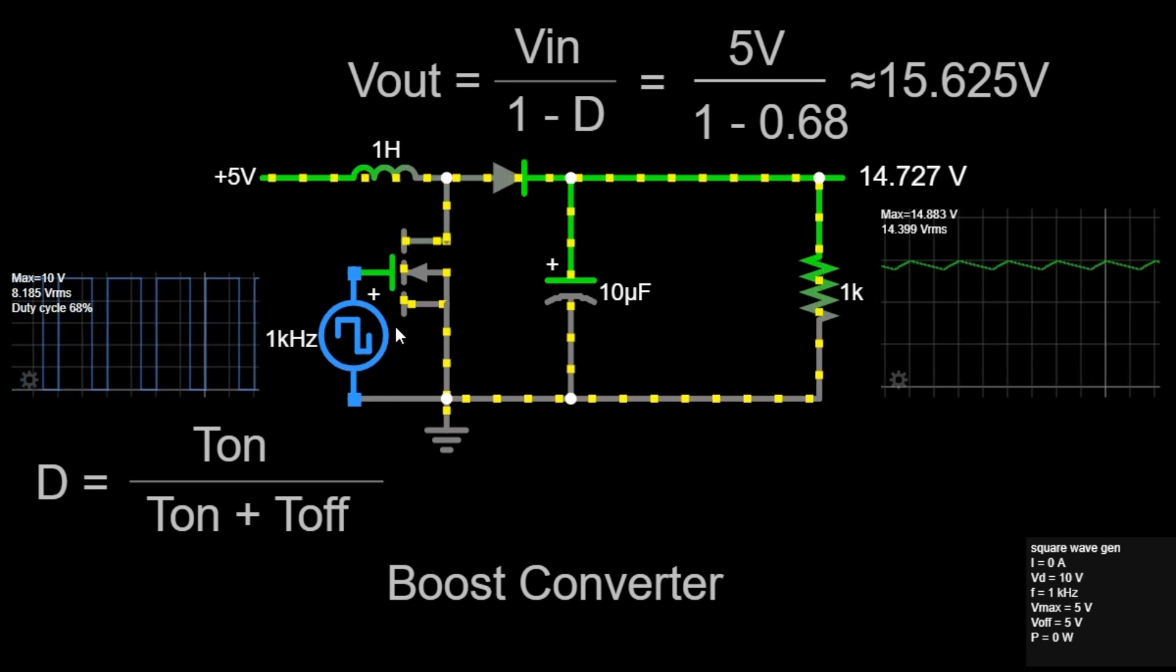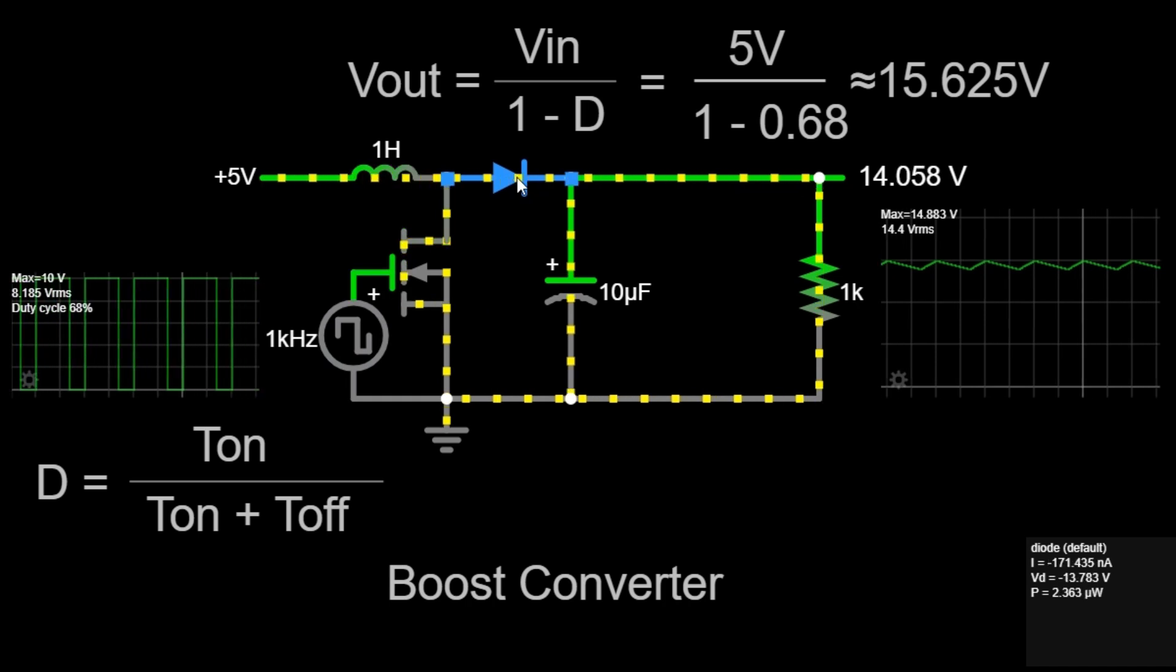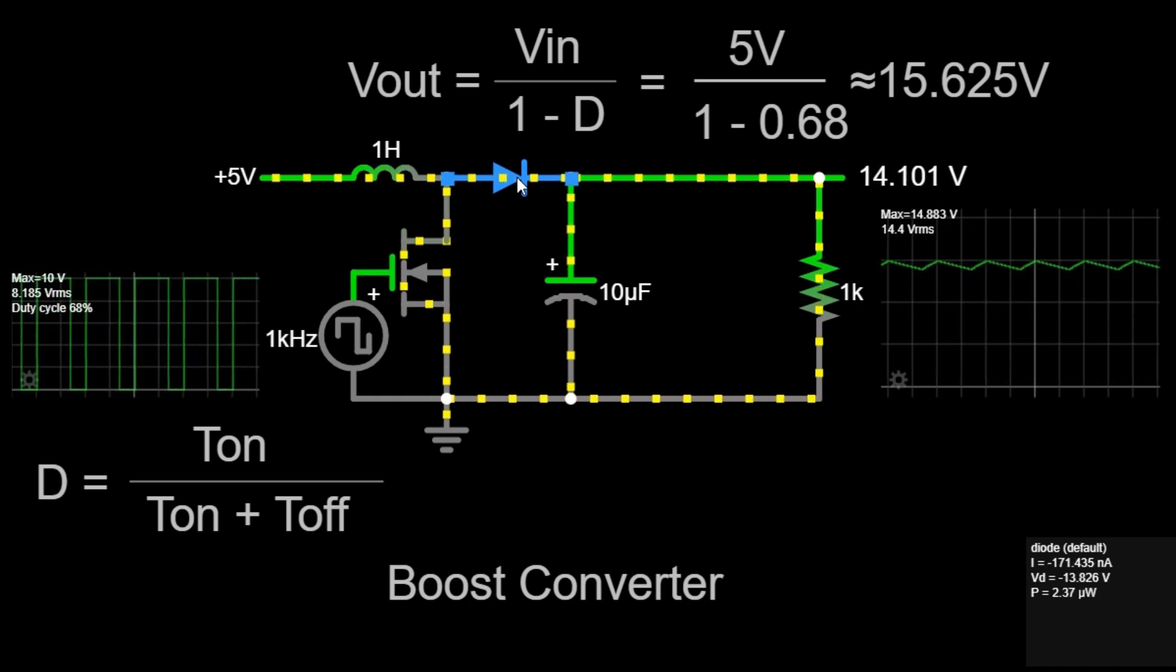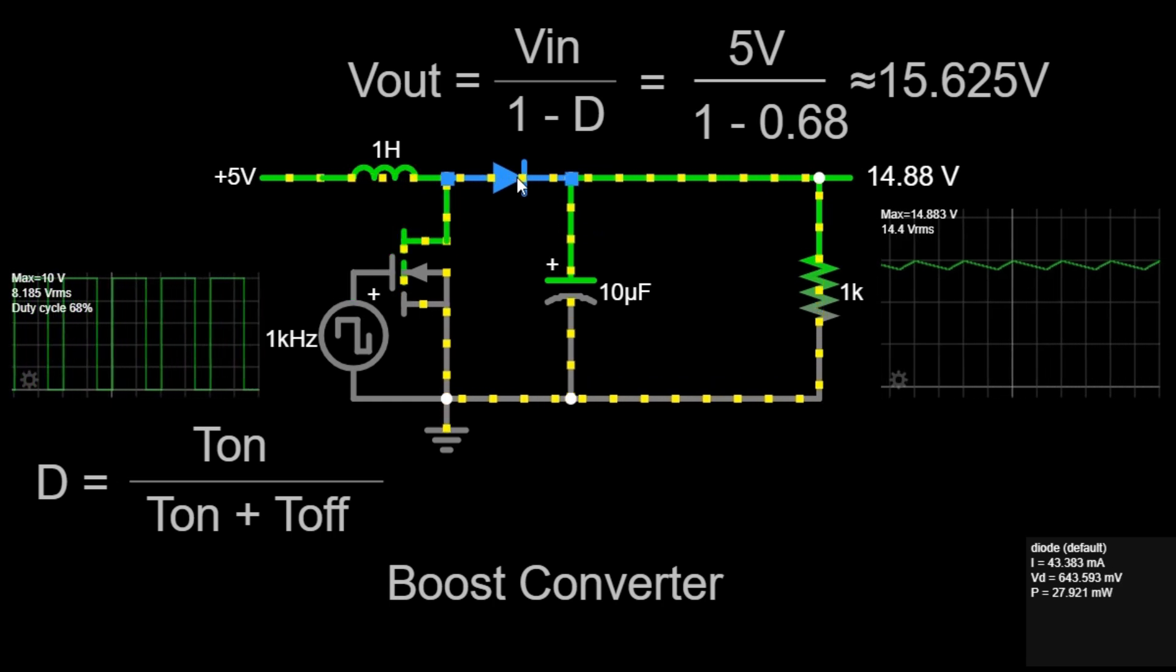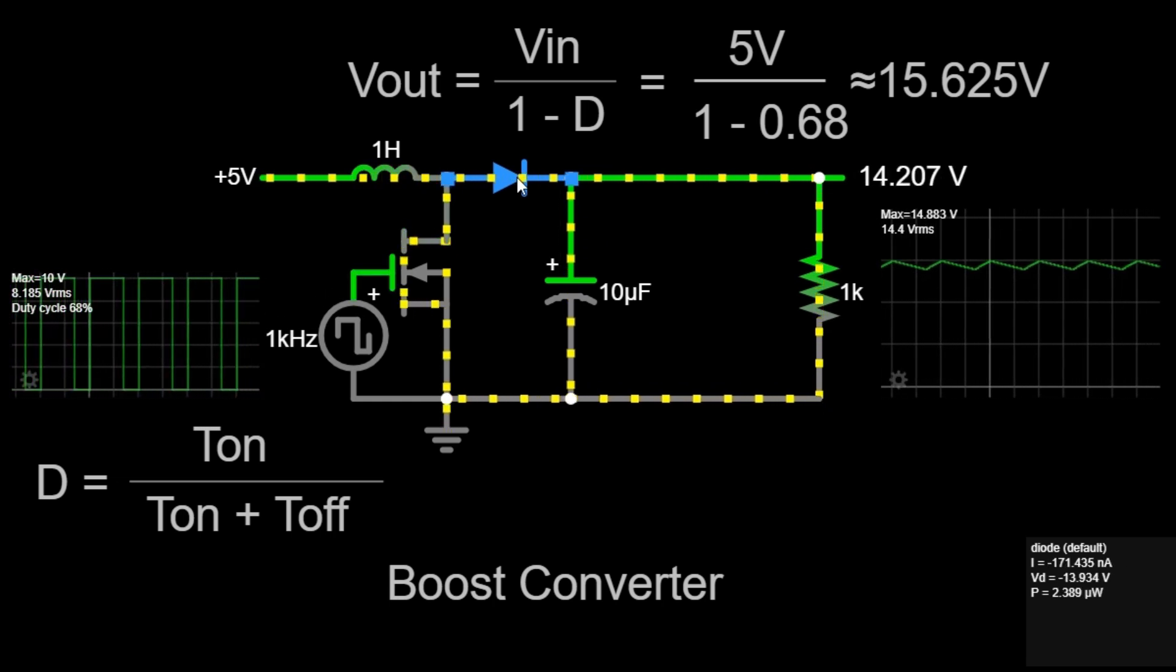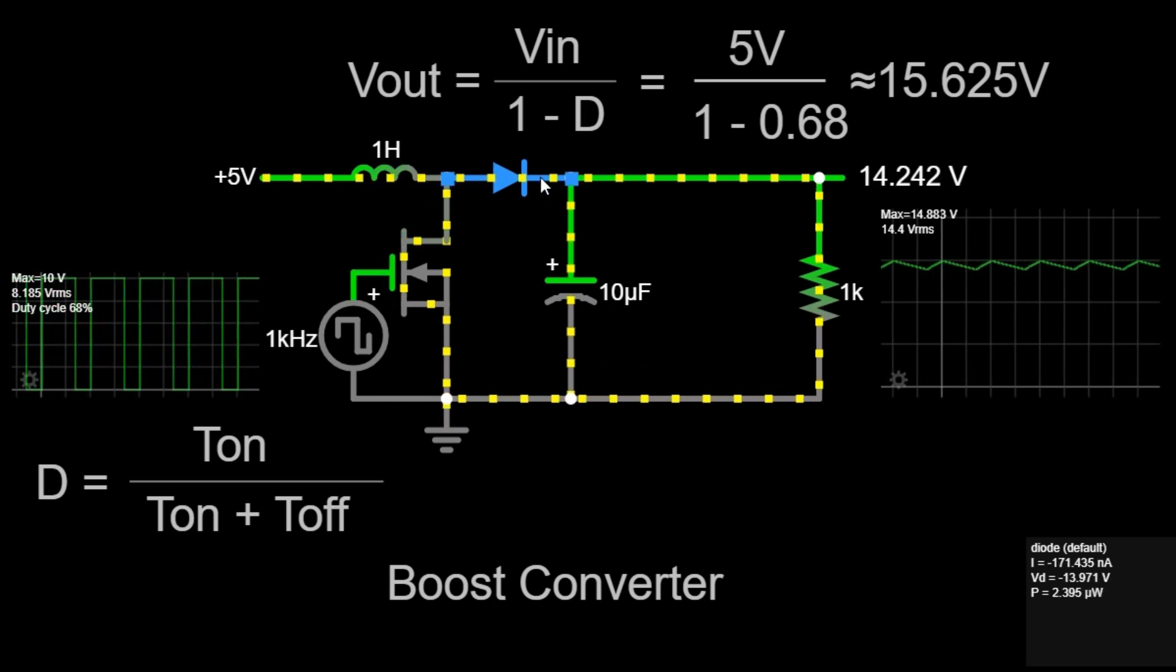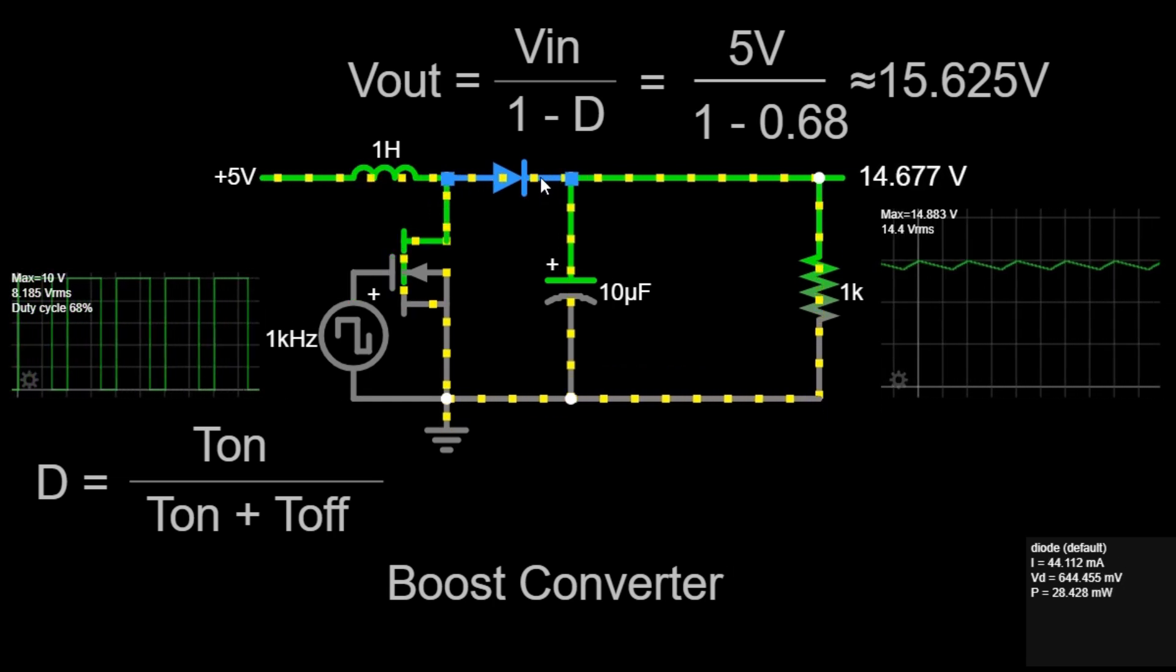Fourth, we have the diode. It ensures current flows in one direction, preventing the capacitor from discharging when the switch is closed. The diode allows current to pass through it in only one direction, acting as a gatekeeper that ensures the capacitor charges properly and prevents backflow of current.